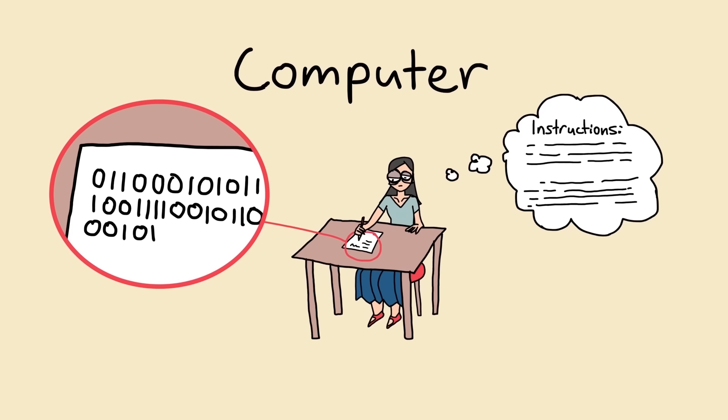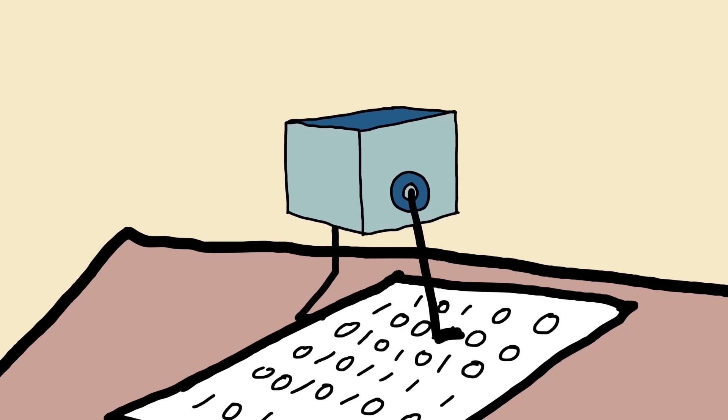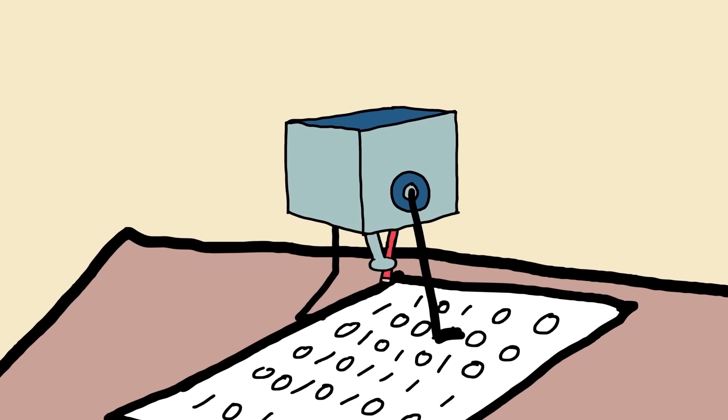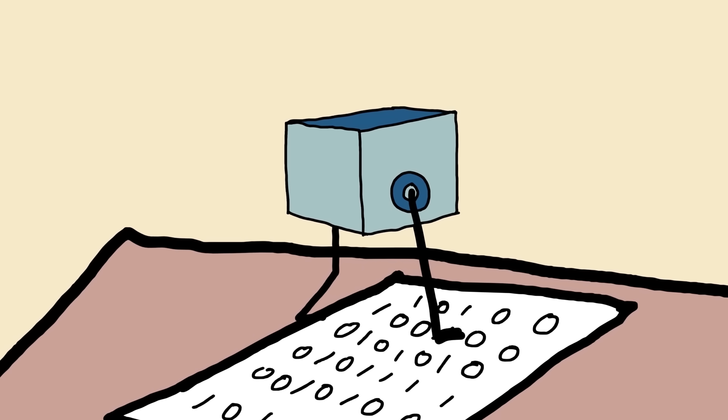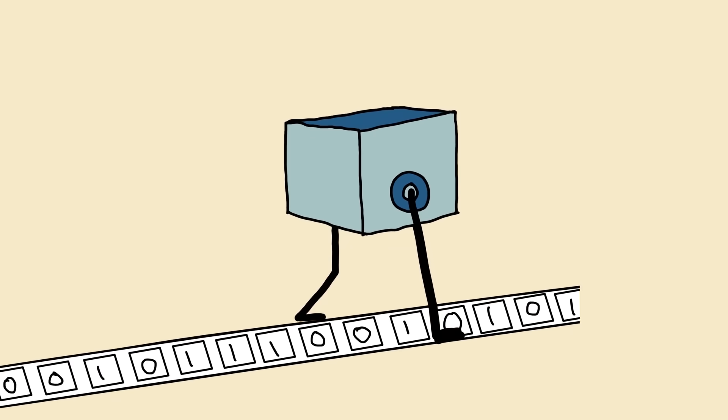And here is where the truly revolutionary part comes in that would transform the world for years to come. Turing recognized that every step of what a human computer did could be replicated by a very simple theoretical machine. In place of the human could be a scanning head, which could read one symbol at a time, erase one symbol at a time, and write one symbol at a time. The piece of paper could be replaced by an infinitely long piece of tape, which contained one symbol per square.